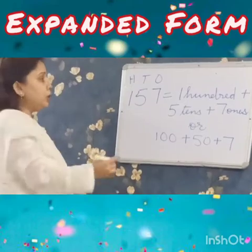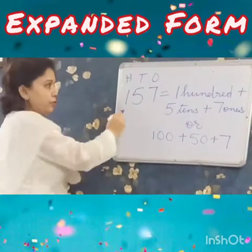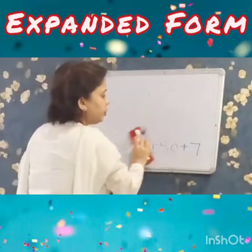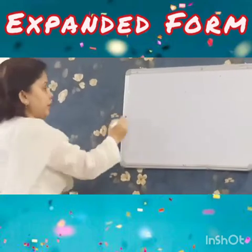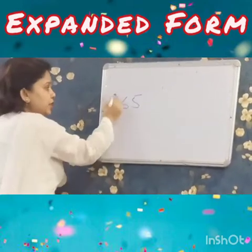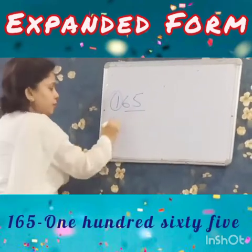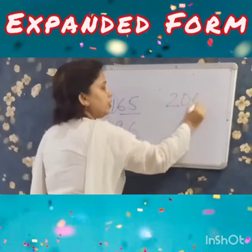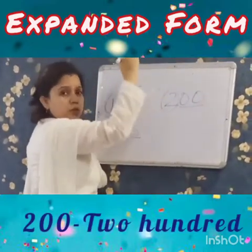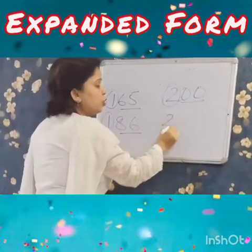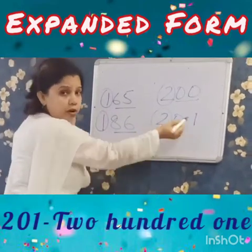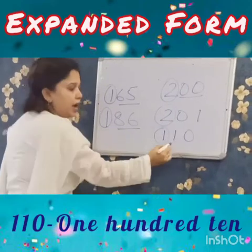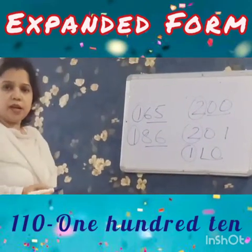When you read this number, you will read 157. So did you understand how to read a 3 digit number? Always remember, a 3 digit number begins from 100. Suppose it is 165 — this 1 is 100, so 1 hundred 65. 186 is read as 186. 200 is read as 200 — we don't say 200 0 0. 201 is read as 201, not 200 0 1. 110 — this 1 is 100 and 10, so 1 hundred 10. Did you understand how to read a 3 digit number?